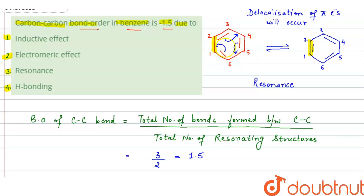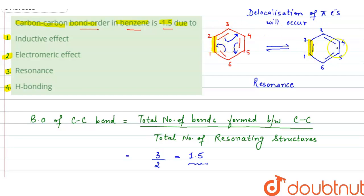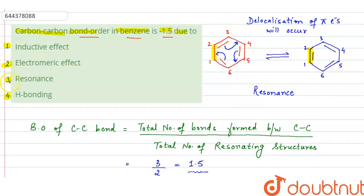A bond order of 1.5 means the carbon-carbon bond shows partial double bond and partial single bond character. For a single bond, bond order should be one; for a double bond, bond order should be two. But it is in between one and two, because due to resonance, for some time it has a single bond, then due to resonance it will have a double bond, then again single, then again double. So its bond order remains in between, that is 1.5, and this is due to the process of resonance.